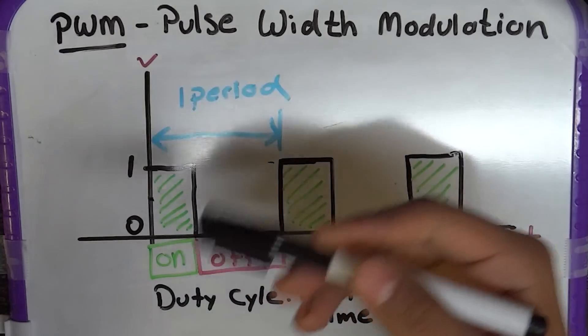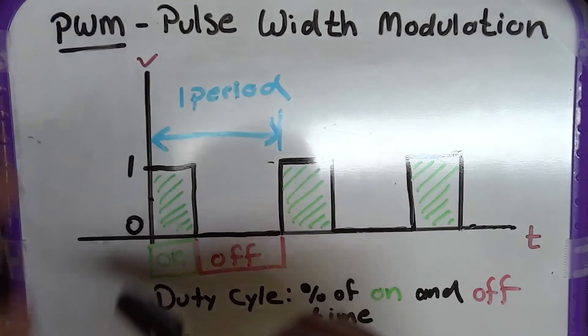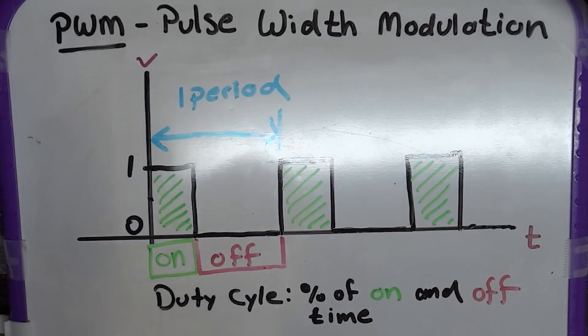And when you discuss pulse width modulation, usually this is given in the period because it's a lot easier to calculate that way. So let's go ahead and give an example problem.